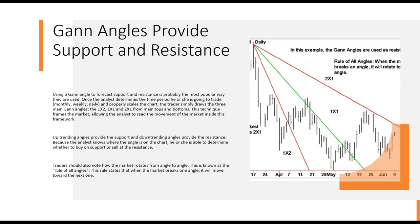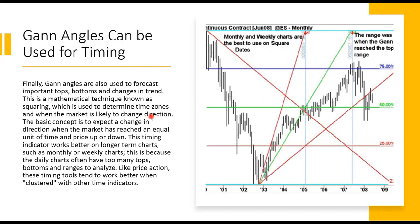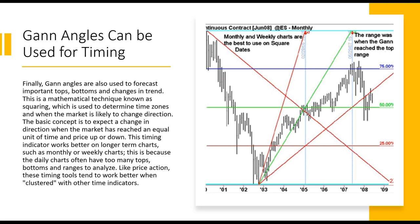A trend line has some predictive value but is unreliable for long-term forecasts due to constant adjustments, whereas GAN fans, once set, do not move. Price can break through each part of the GAN fan umbrella, but the GAN fan itself doesn't move. GAN fans give us support and resistance levels. The main GAN angles are one-times-two, one-times-one, and two-times-one, starting at 45 degrees. The best way to get a perfect 45-degree angle every time is to use the GAN square tool, open the settings, make all fan levels visible, and the angle will always be a perfect 45 degrees.